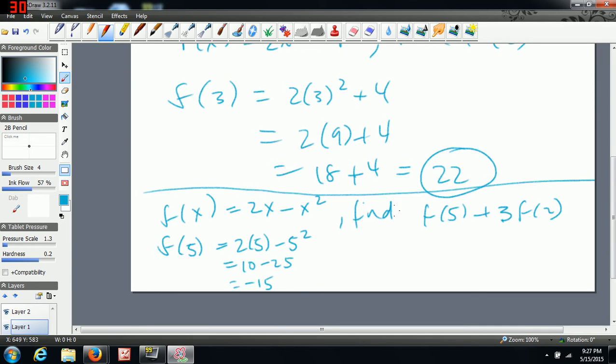And then it's got 3 times f of 2. So I'm going to find f of 2 separately. Again, into my original function, I plug in this time 2. So 2 times 2 minus 2 squared. So that becomes 4 minus 4, which is equal to 0.